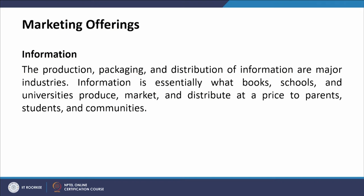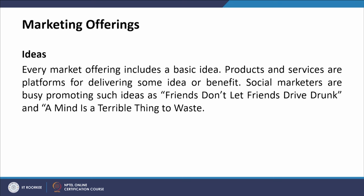Information: the production, packaging, and distribution of information are major industries. Information is essentially what books, schools, and universities produce, market, and distribute at a price to parents, students, and communities. Ideas: every market offering includes a basic idea. Products and services are platforms for delivering some idea or benefit. Social marketers promote ideas such as 'friends don't let friends drive drunk' and 'a mind is a terrible thing to waste.'